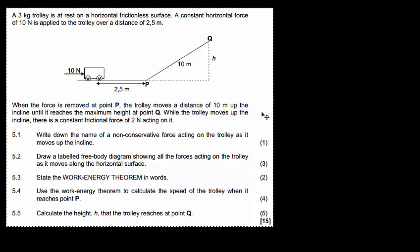So here's actually where we're supposed to be using this theorem, this formula, and what I just mean to say is that this is where we're actually going to use the delta x as well. Okay, so let's quickly read it. A 3kg trolley is at rest on a horizontal surface — so that's 3kg — on a frictionless surface, so there's no friction involved here.